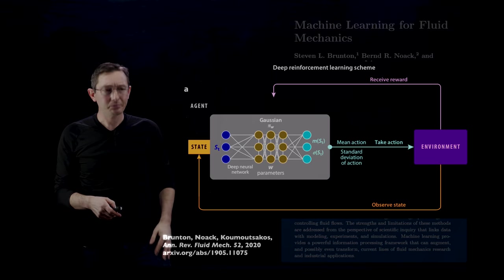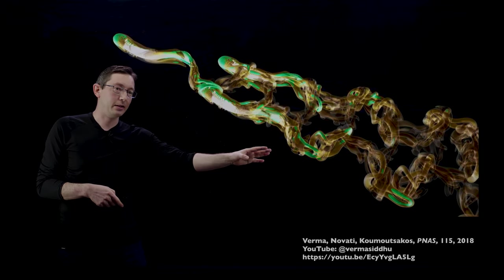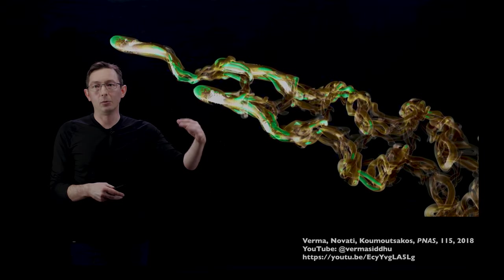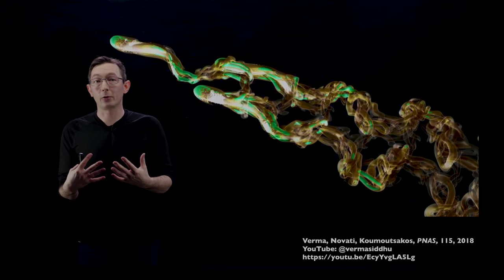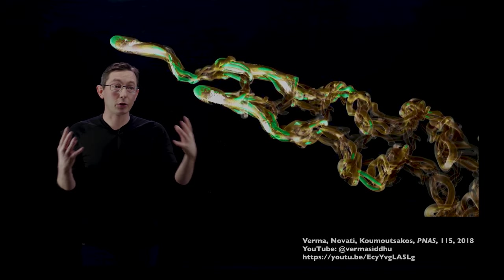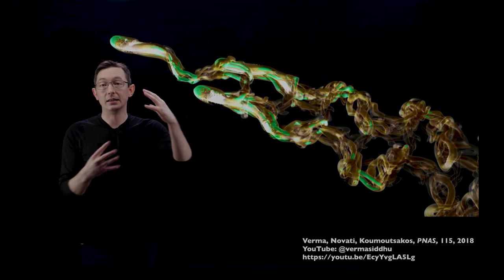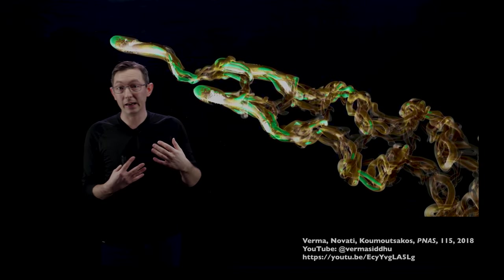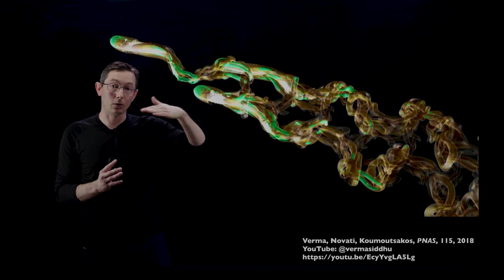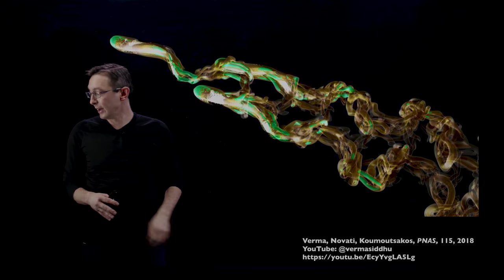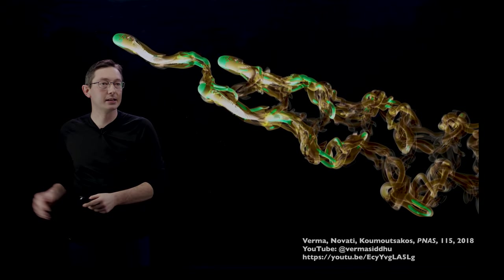I'm just going to highlight one of my favorite works on this, which is this paper by Verma, Novati, and Koumoutsakos in PNAS 2018. Essentially what they did was apply deep reinforcement learning on a very sophisticated three-dimensional simulation of fish in different configurations to see if trailing fish can harness energy from the leading fish, can they school or tail fish efficiently, can you build a control law to do that?